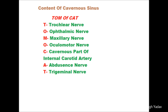The full form of the mnemonic is: T for Trochlear nerve, O for Ophthalmic nerve, M for Maxillary nerve, O for Oculomotor nerve, C for Cavernous part of the internal carotid artery, A for Abducens nerve, and T for Trigeminal nerve.